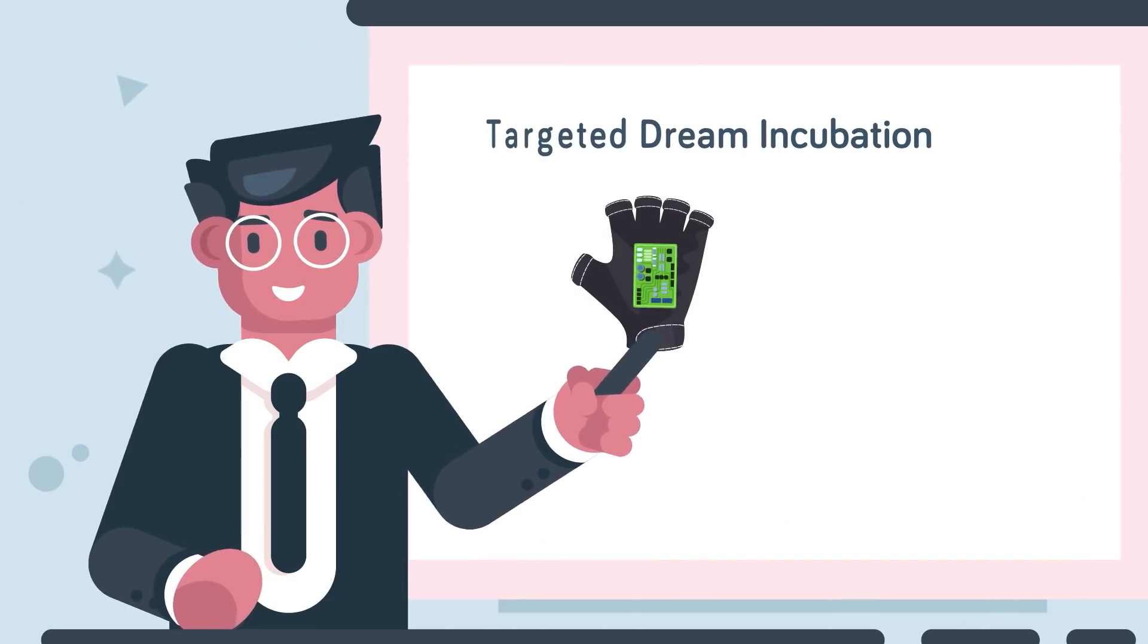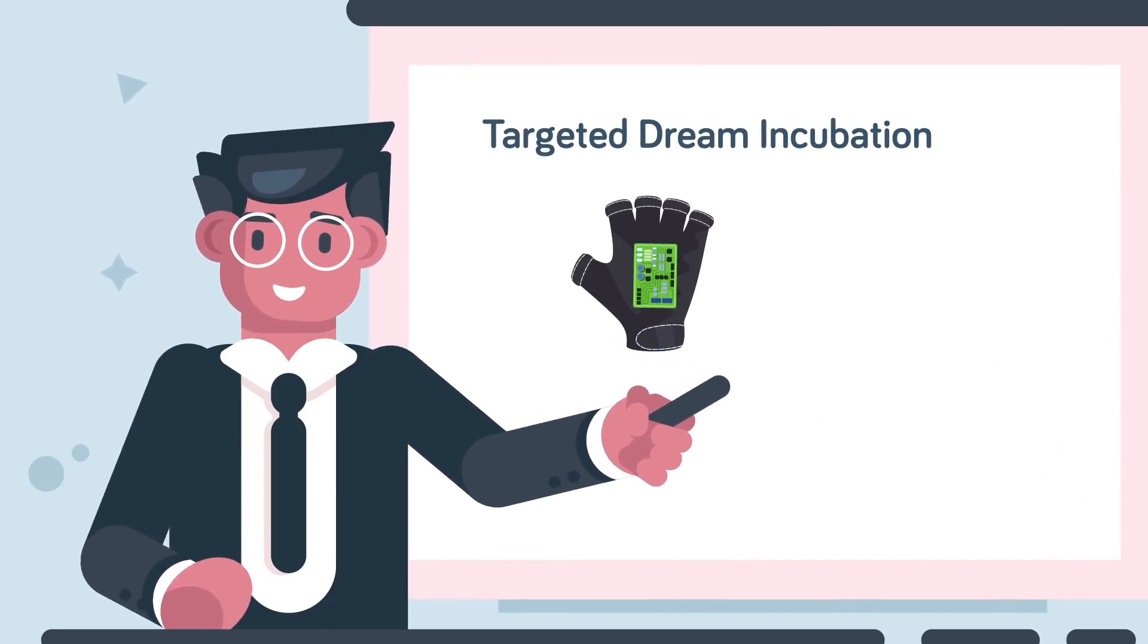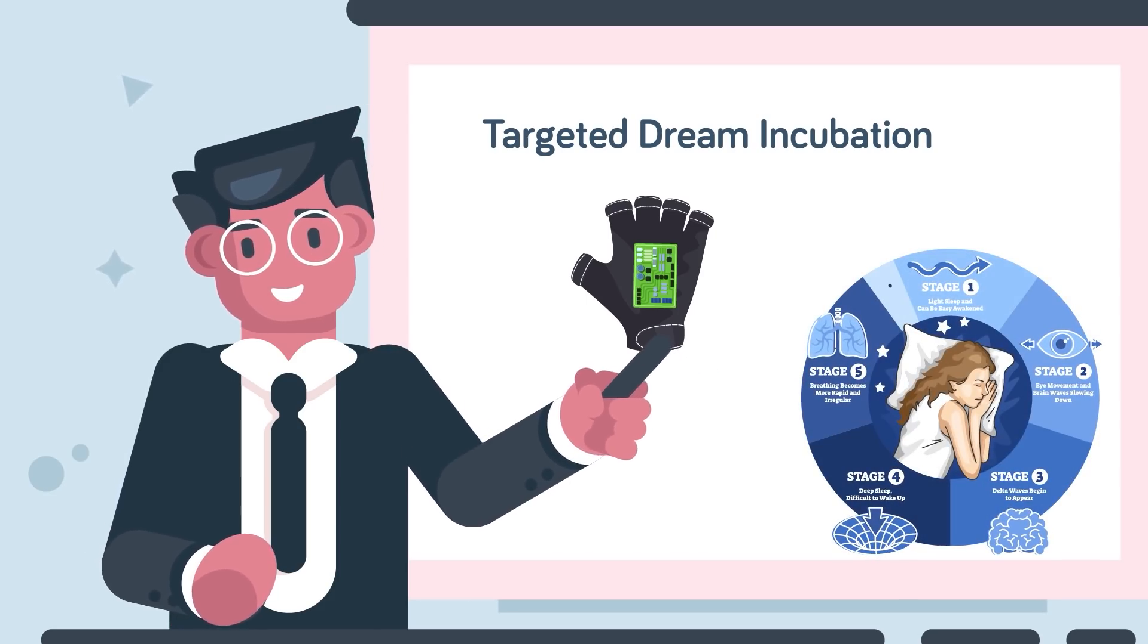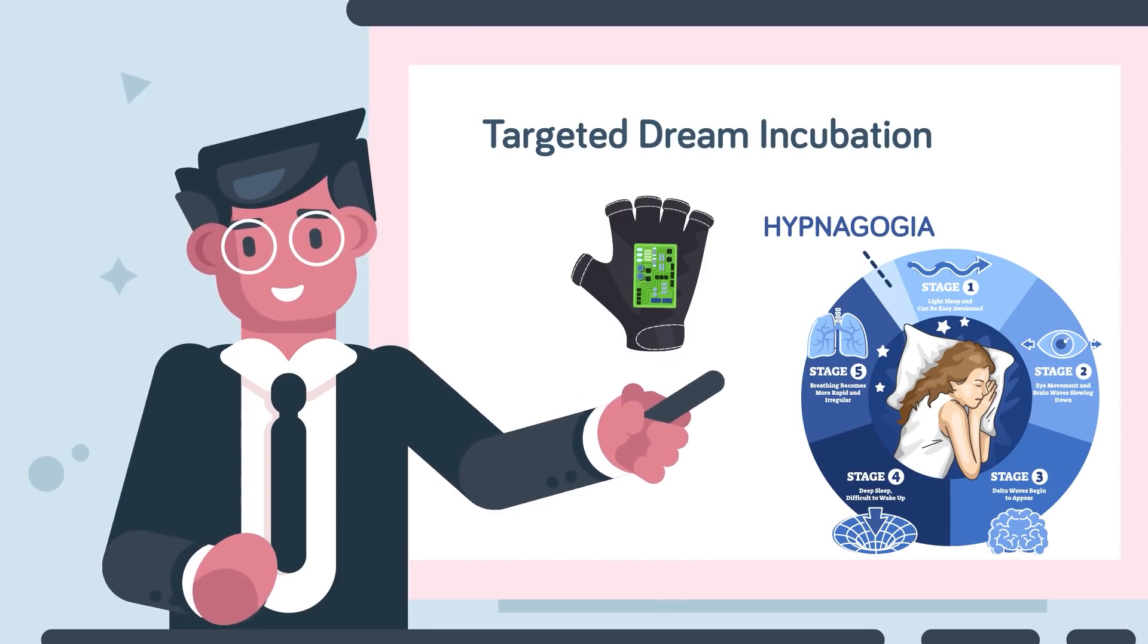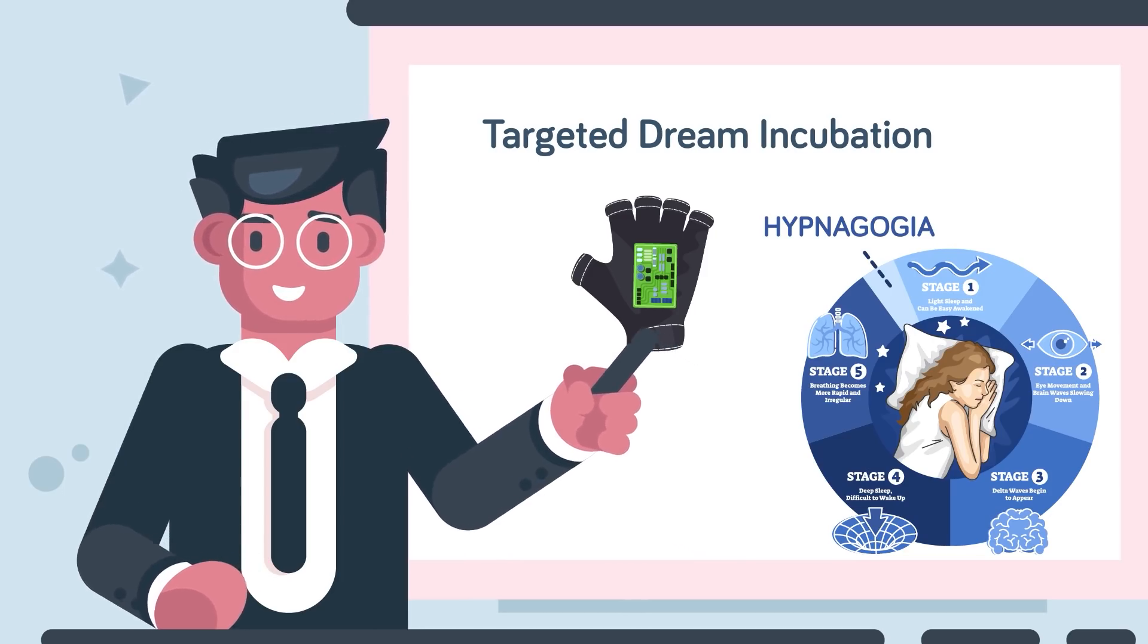Dormio uses a similar process called targeted dream incubation that starts while the person is still awake, and continues through an early sleep stage called hypnagogia. While those using Dormio don't control their dreams, they are able to influence the direction they'll take before they start.